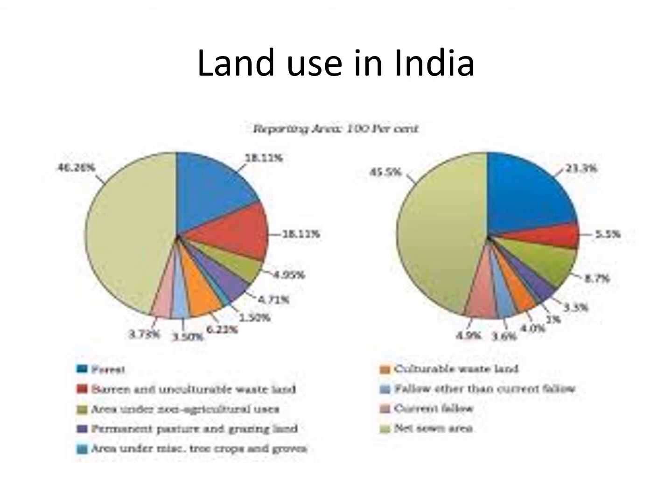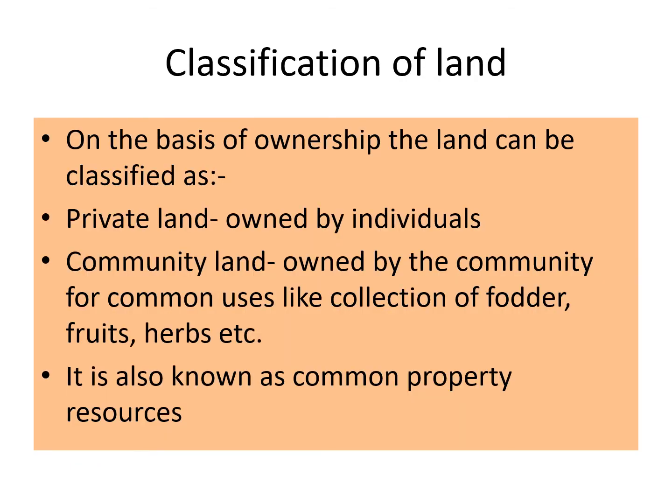Now people are aware about the importance of forest. We can classify land on the basis of ownership into two parts. First, private land, which is owned by individuals. Second, community land, owned by the community for common uses like collection of fodder, fruits, herbs, and in villages and cities, parks are an example of common land. It is also known as common property resource.